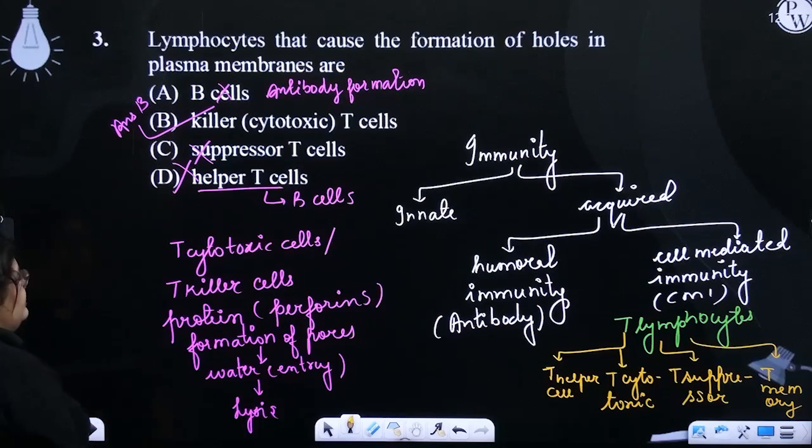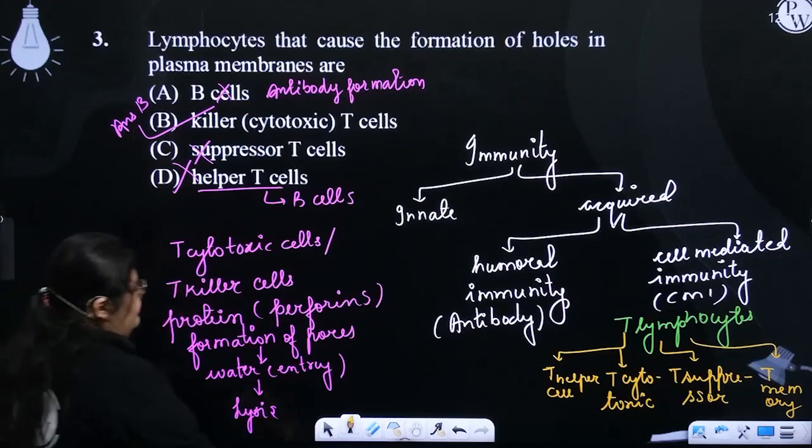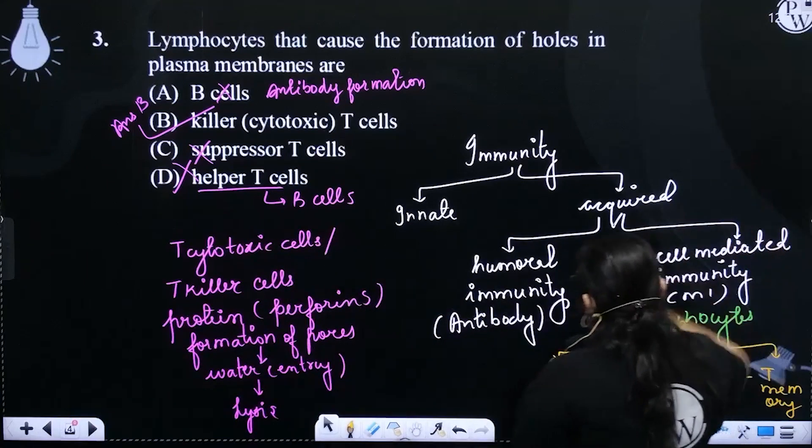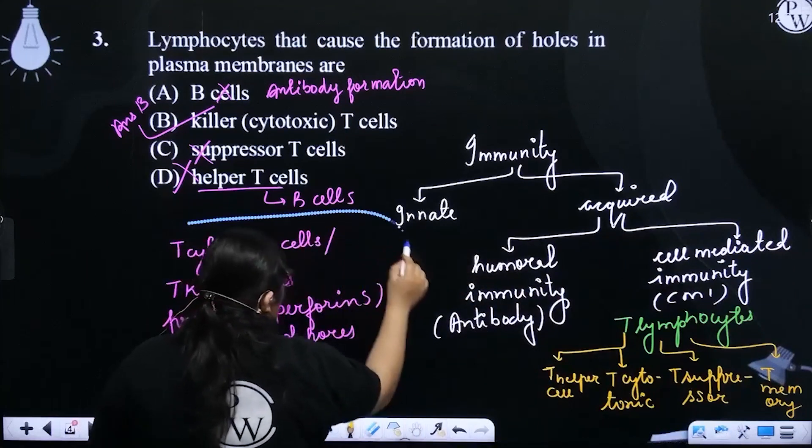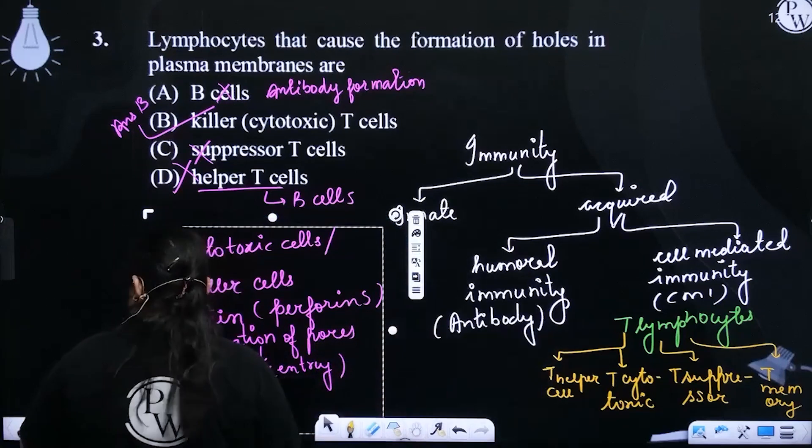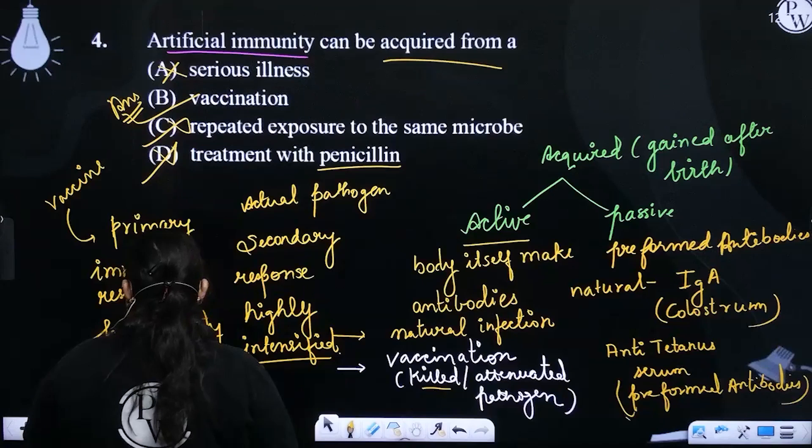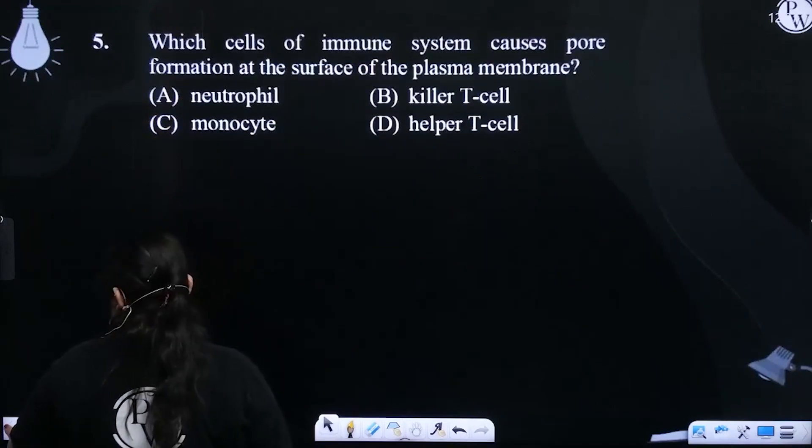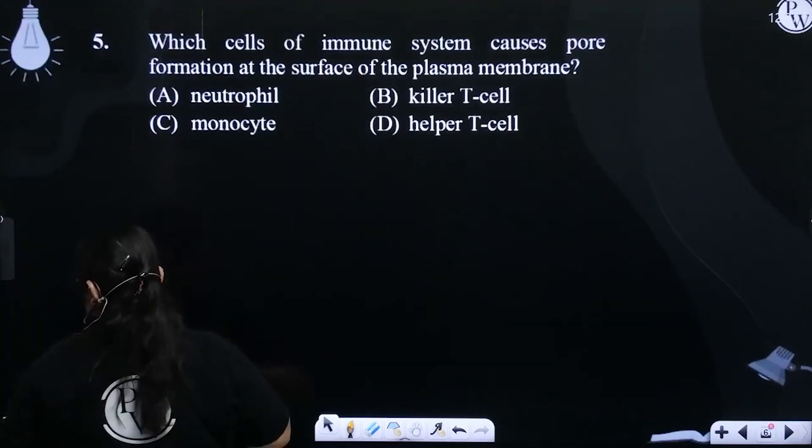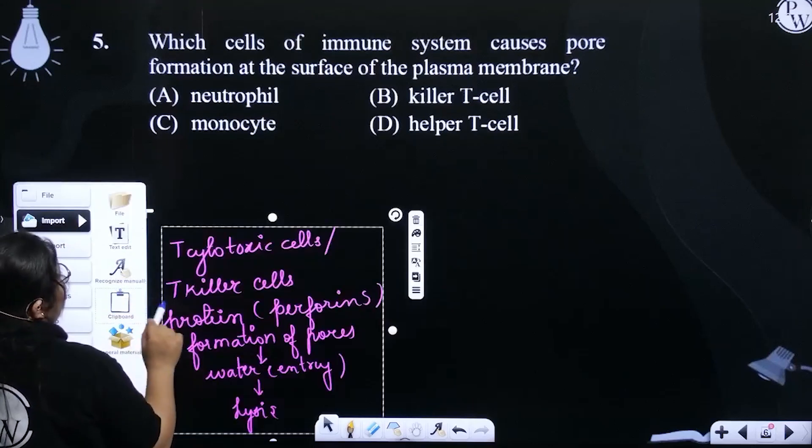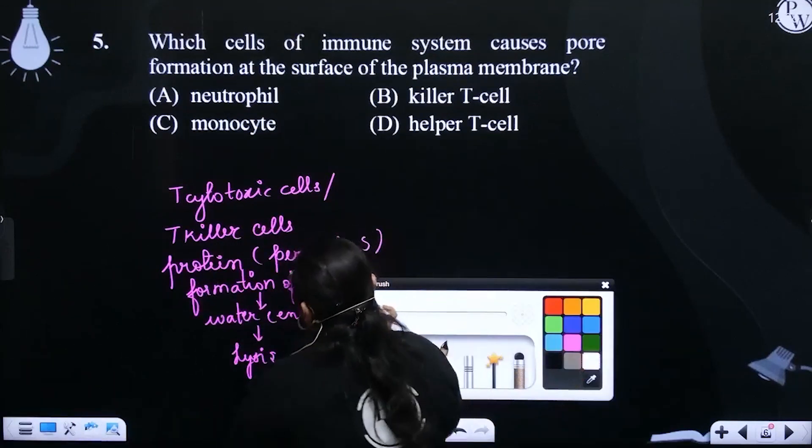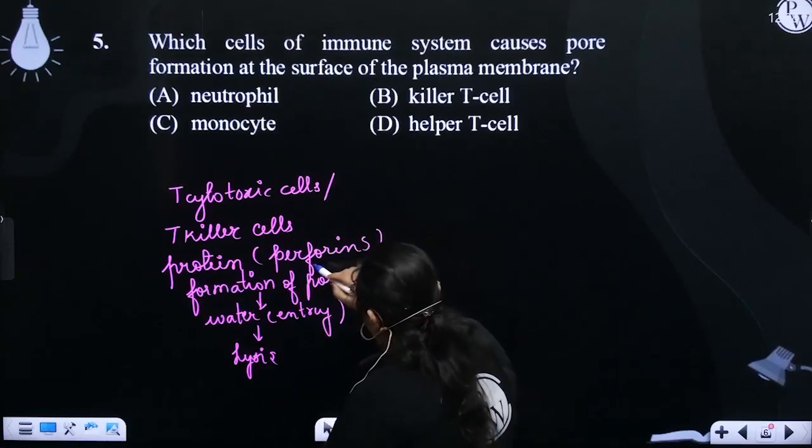So, these cytotoxic cells, the cytotoxic killer cells, the T killer cells. So, cytotoxic killer cells, they are releasing this protein that is called perforin.